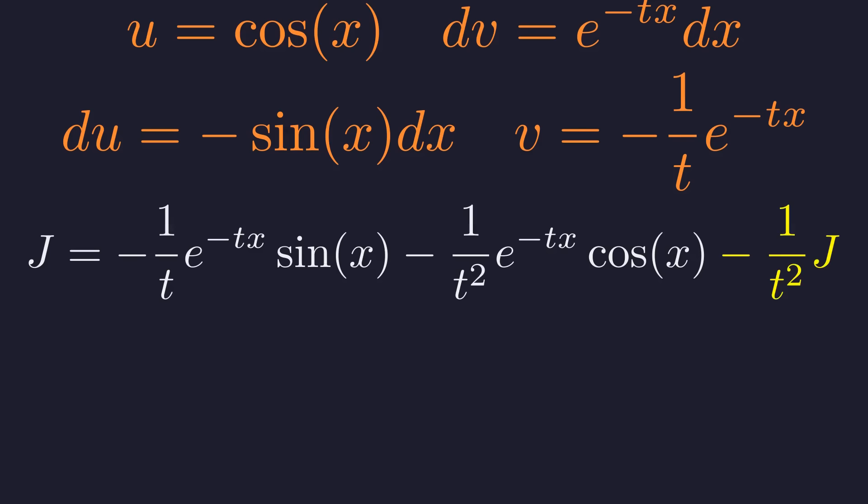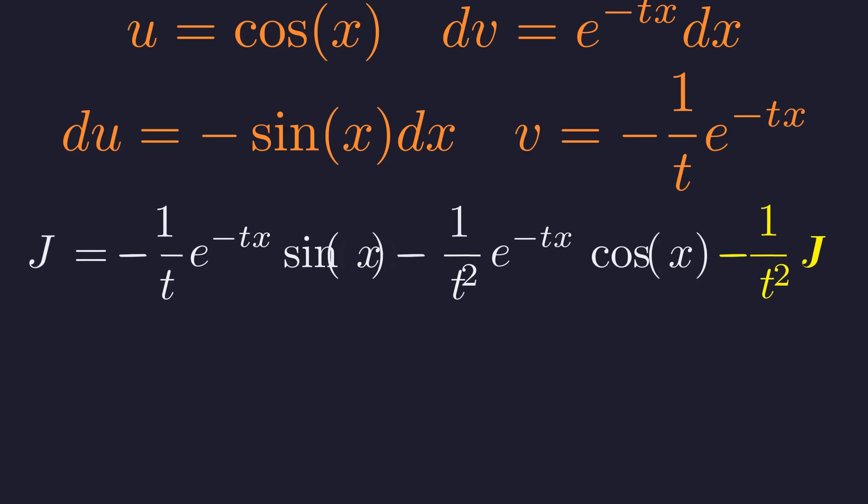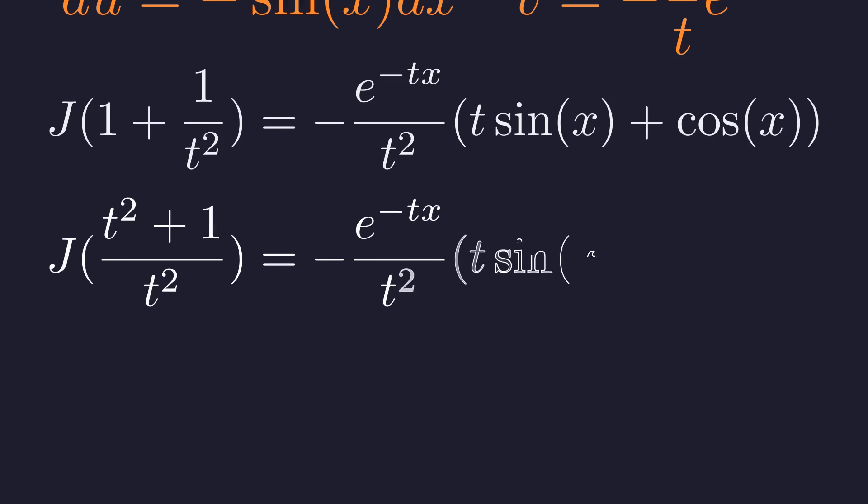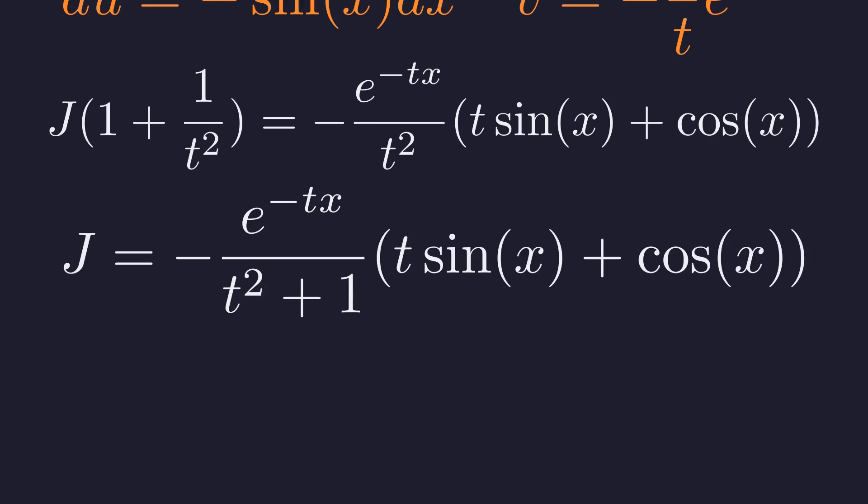Now we can solve for j algebraically. Let's add 1 over t squared times j to both sides. Factoring out j on the left and combining terms on the right gives us this. Combining the term in the parenthesis on the left side, now we can multiply both sides by t squared over the quantity t squared plus 1 to isolate j. Notice the t squared terms will cancel. And there we have it, the result for our indefinite integral j.